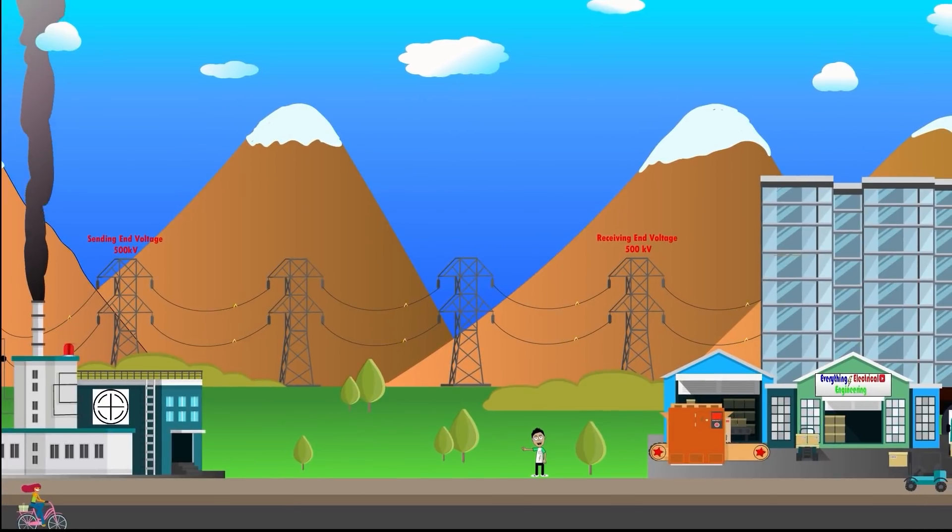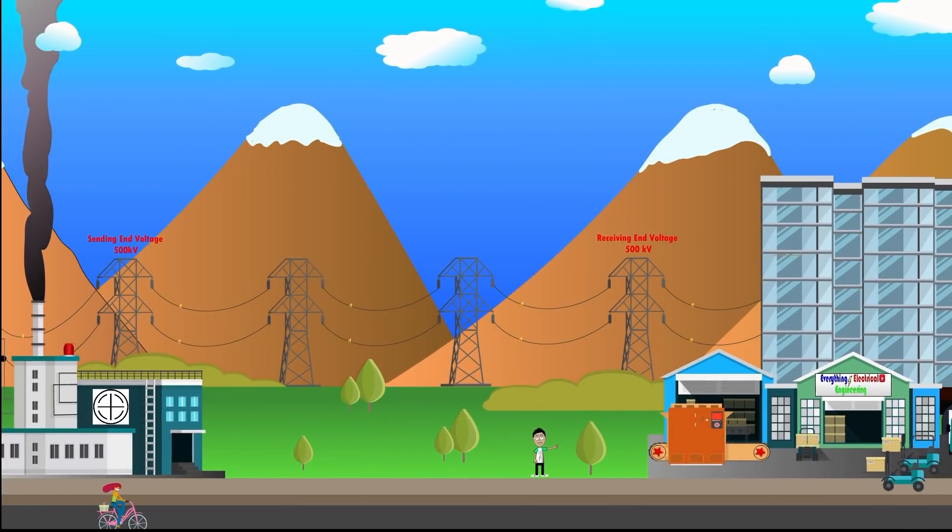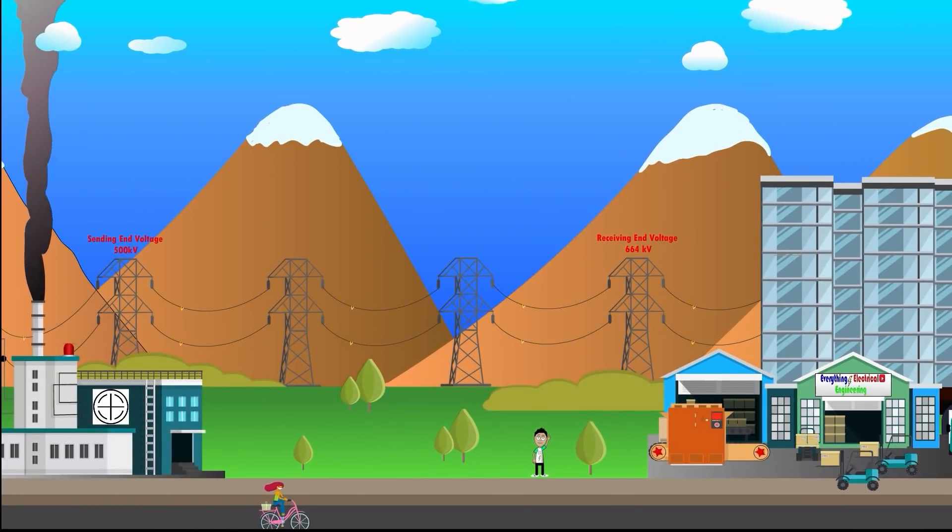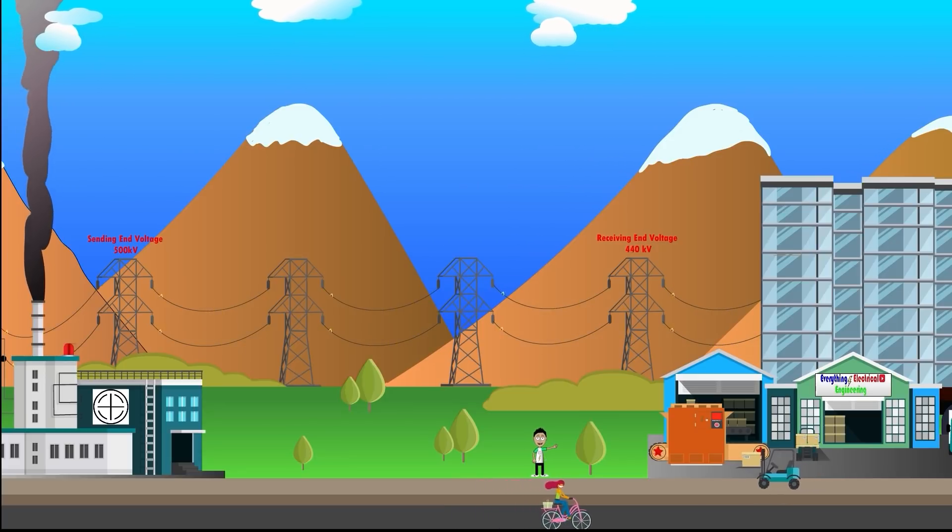Considering power being transported from generation to load center for medium to long transmission lines, if the line is lightly loaded or no load is applied the voltage at the receiving end will be larger than the sending end. This is known as the Franti effect. Conversely for heavily loaded lines the voltage at the receiving end will decrease due to the power factor of the loads applied.